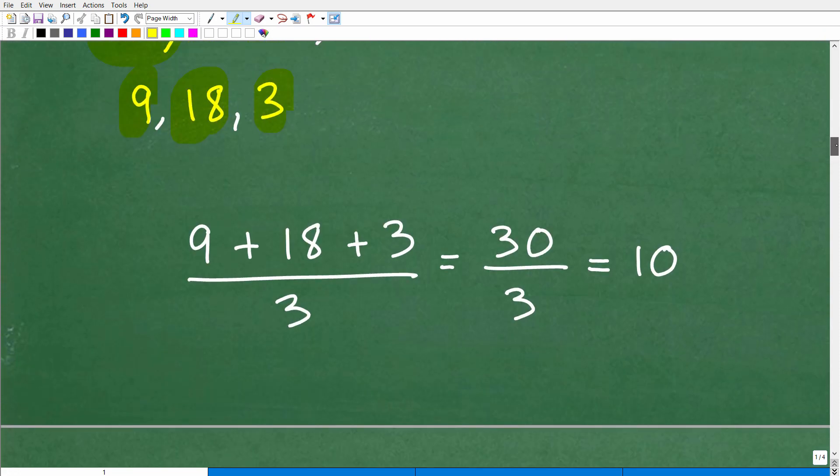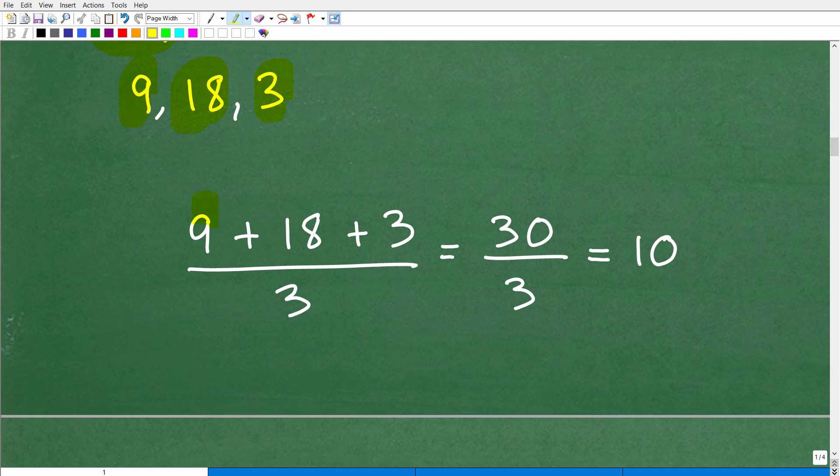And when we take the average of those numbers, it should be equal to 10. Let's go ahead and just check that. Make sure we did this correctly. So the average of 9, 18 and 3, that's 9 plus 18 plus 3. Add all those up. Of course, we have three numbers here. One, two, three. So we're going to divide by 3. So 9, 18 and 3, we add all that up. We get 30 over 3, 30 divided by 3 is in fact 10.